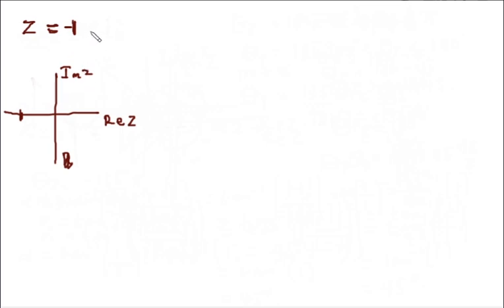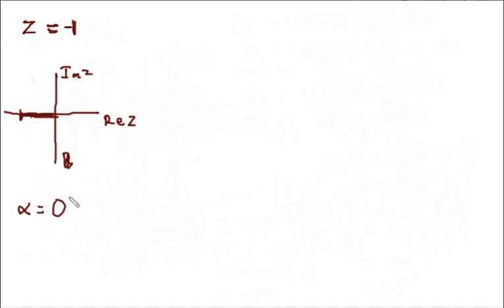The imaginary part is equal to 0, so the complex number should be about here. Next we find the value of alpha. The value that alpha makes with the x-axis here is 0 degrees.